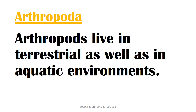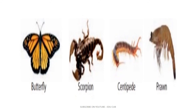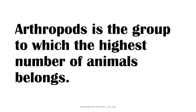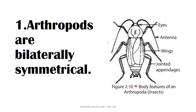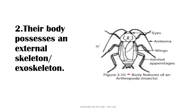Arthropods live in terrestrial as well as aquatic environments. Examples include: butterflies, scorpions, centipede, and prawns. Arthropoda is the group to which the highest number of animals belongs. Features of Arthropoda: arthropods are bilaterally symmetrical and their body possesses an external skeleton, that is, an exoskeleton.